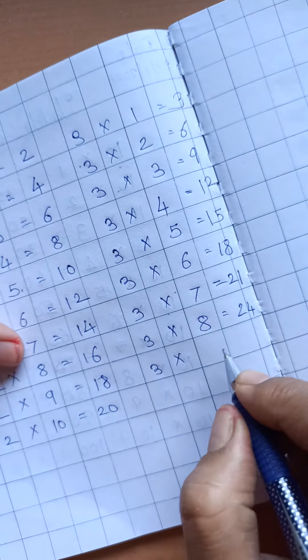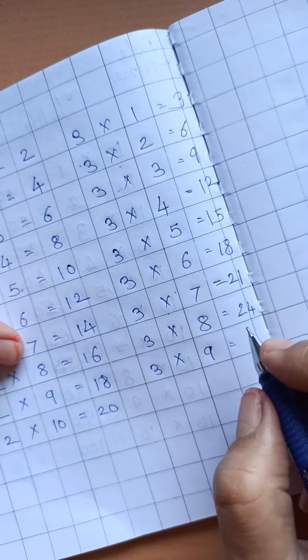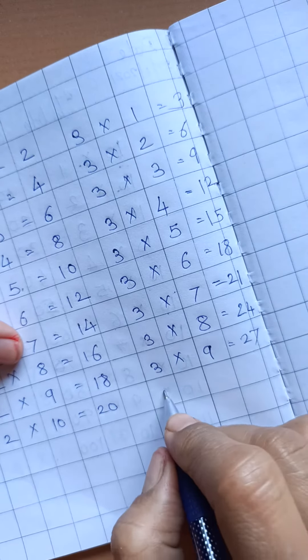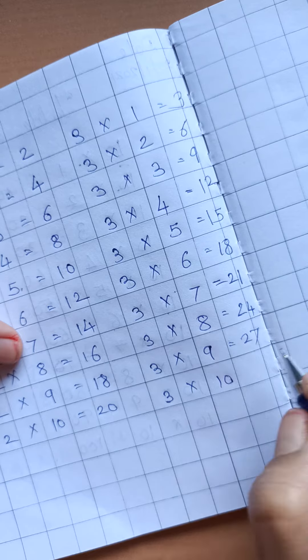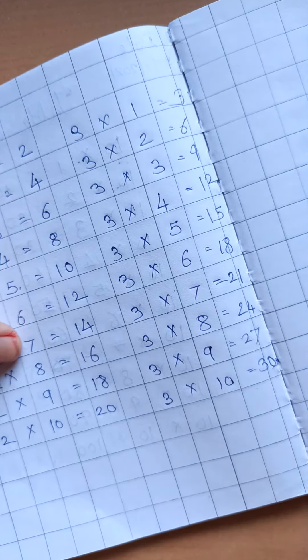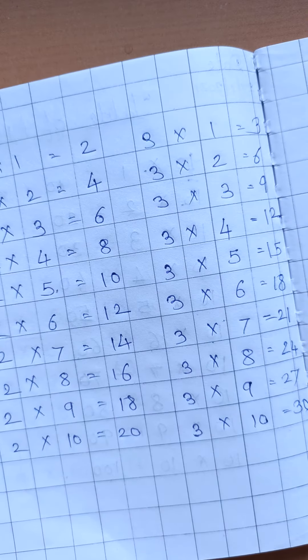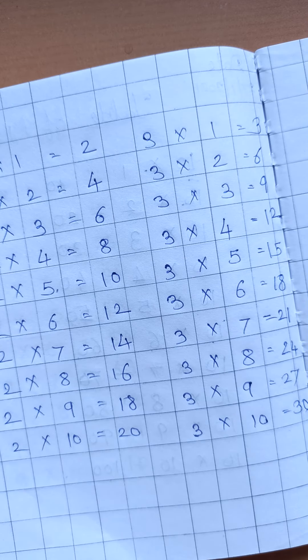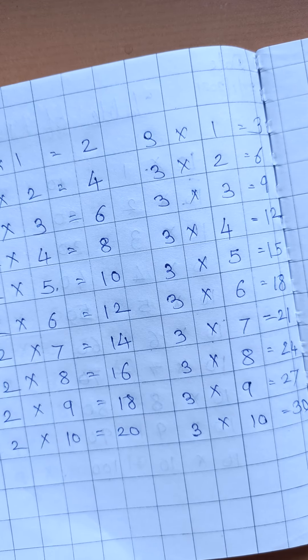3 9s are 27. And 3 10s are 30. Okay children, practice these 2 tables. Bye. Thank you.